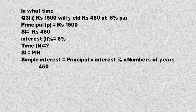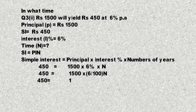Simple interest = 450، principal = 1500، interest rate = 6%، number of years = n۔ 6% کو 6/100 لکھیں گے۔ دو صفر کٹ جائیں گے اور 15 × 6n = 450 رہ جائے گا۔